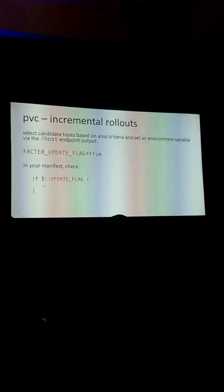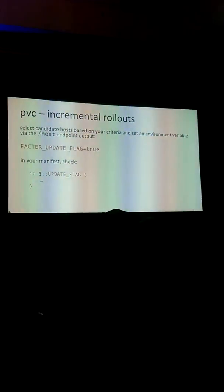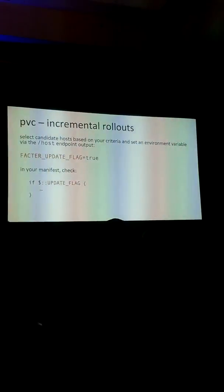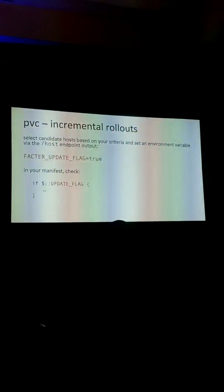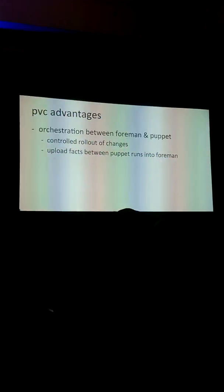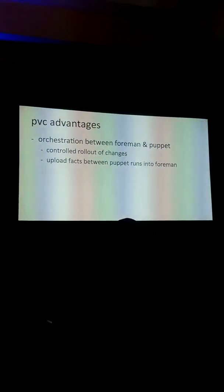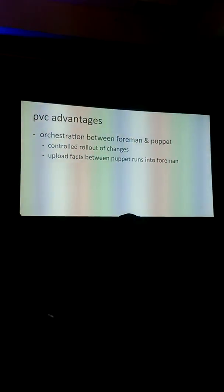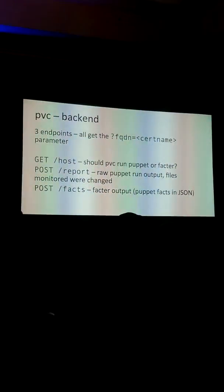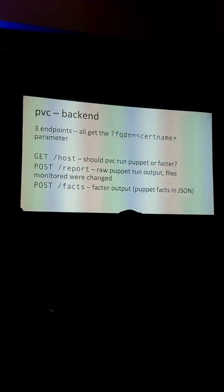A lot of people don't notice, but if you set an environment flag in Facter — like facter_underscore_something — it actually propagates into your manifest as a variable. What you can do is orchestrate between Facter and Puppet so that on the PVC backend you set this environment variable and it gets pushed out to your manifest. Your manifest checks that sort of feature flag and voila, you have some sort of orchestration — not a shotgun rollout approach.